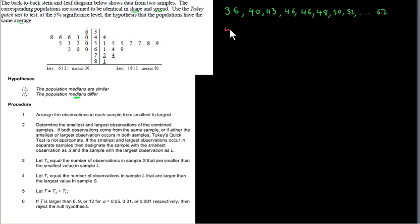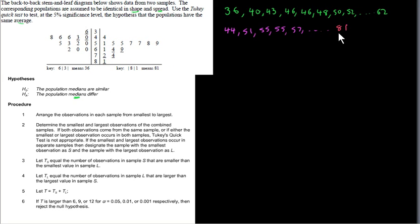For the other sample, the smallest value has stem 4, leaf 4, corresponding to 44. The next largest is 51, then 55, another 55, 57, up to 59, then 61, 64, 69, then 72, 74, and finally 81. The first step of the two-key quick test procedure is to arrange observations in each sample from smallest to largest, which is already done in our stem and leaf diagram.